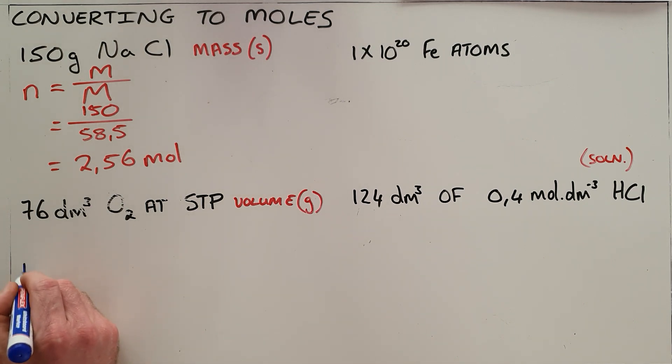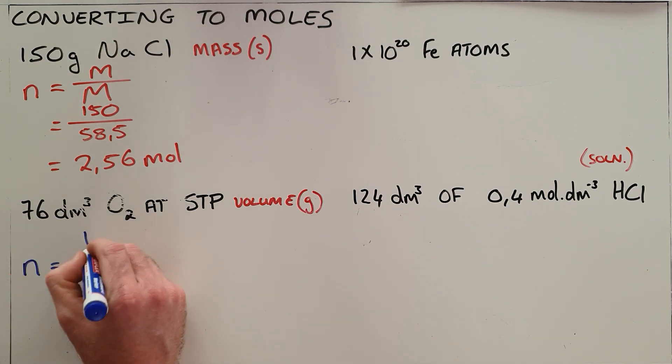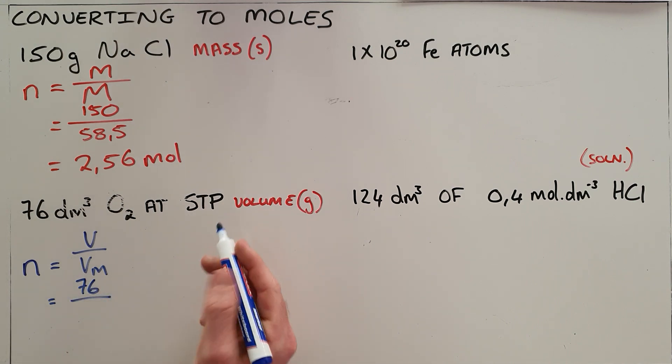We can use the following formula: number of moles equals the volume of that substance divided by the molar gas volume. In this case, we were given 76 cubic decimeters. The molar gas volume at STP is 22.4, and we can then see that 76 cubic decimeters of oxygen at STP is exactly 3.39 moles of oxygen.